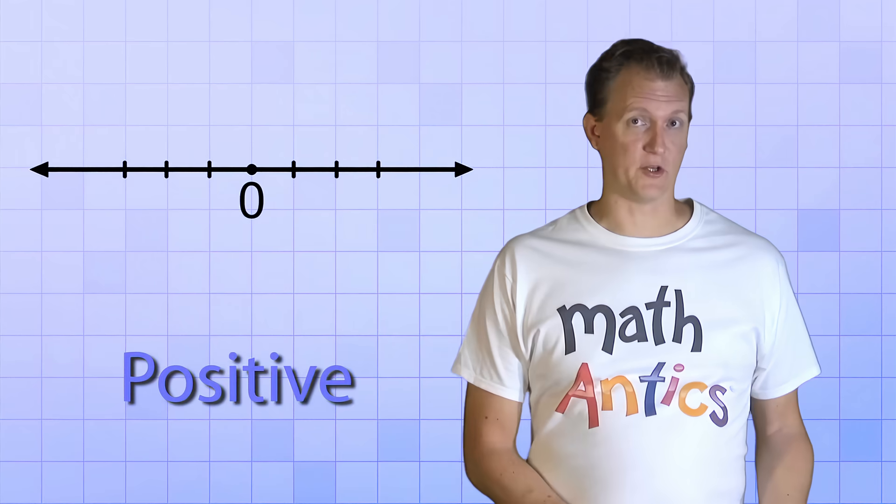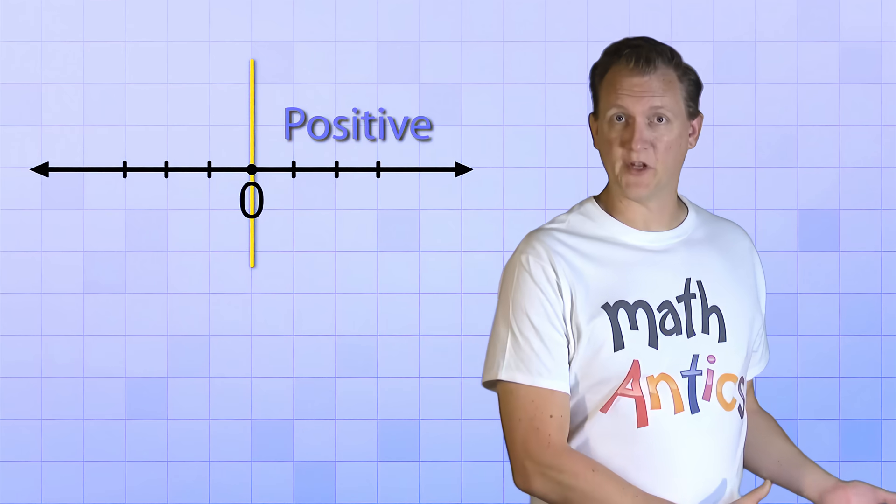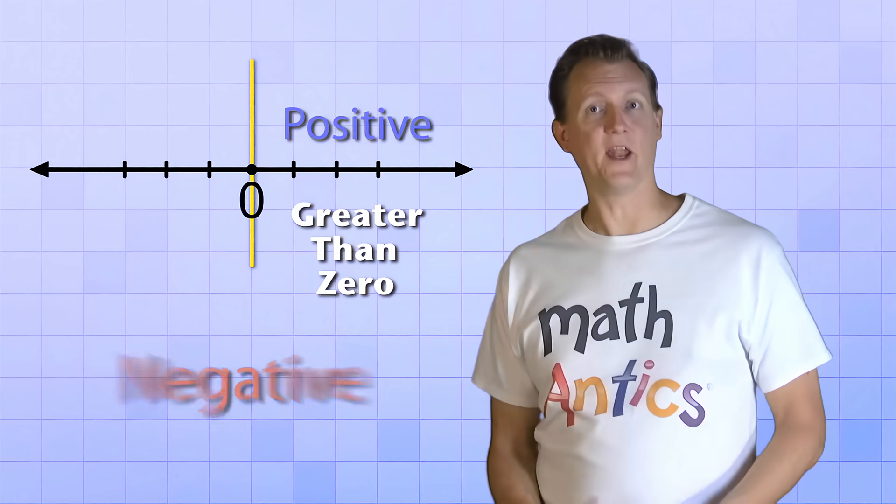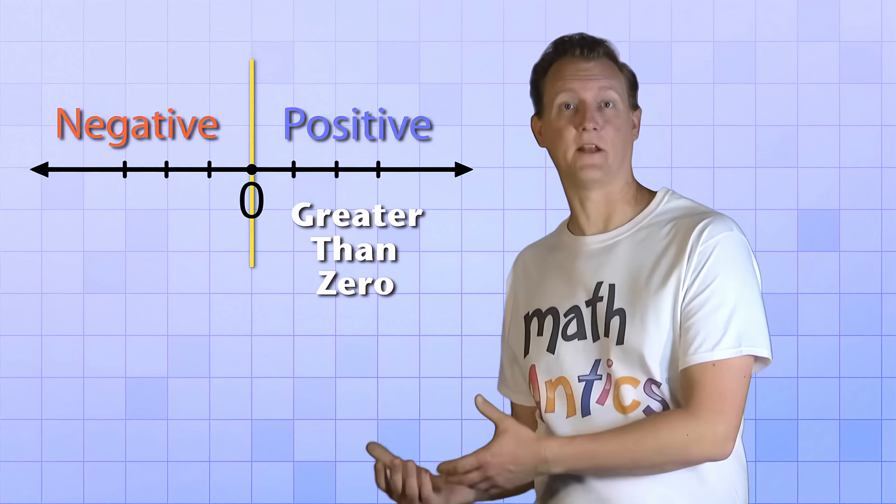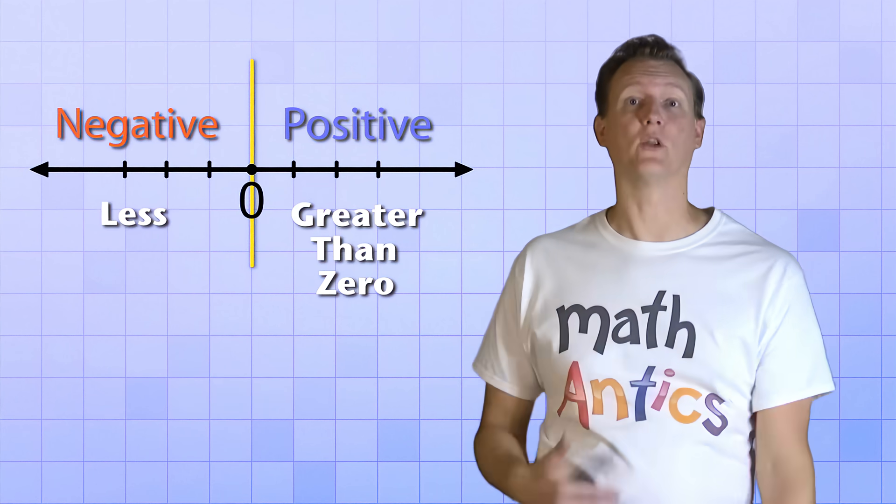Alright, so the positive integers are on the right side of 0 on the number line, which means they're all greater than 0. And the negative integers are all on the left side of 0 on the number line, which means they're all less than 0.